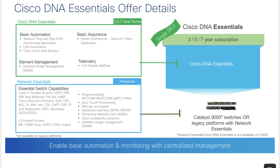Then it comes to the green one — the subscription-based license that you need to buy. You cannot skip this; you need to buy it when you order the switch, either in three, five, or seven year terms. I would suggest buying it in a three-year term so you can try it and see if you actually need it.